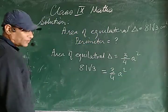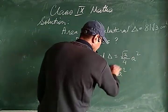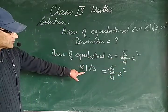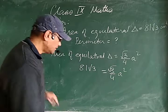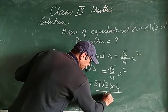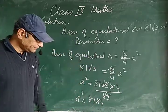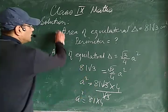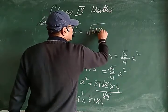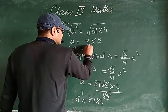The area of the equilateral triangle is given as 81√3, so: 81√3 = √3/4 × a². Cross-multiplying: a² = 81√3 × 4 / √3. Cancelling √3, we get a² = 81 × 4. Taking square root on both sides: a = √81 × √4 = 9 × 2 = 18 centimeters.